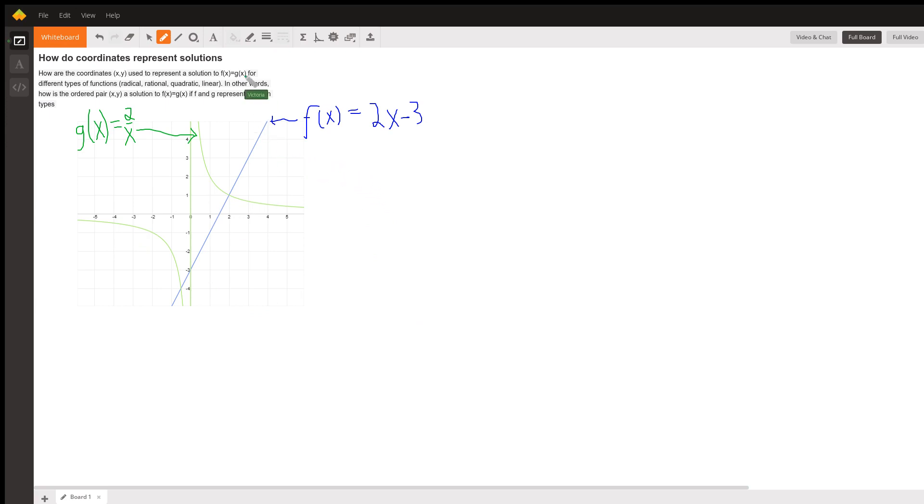Now, if you set f of x equal to g of x, you could solve this by setting 2x minus 3 equal to 2 over x and do a whole bunch of algebra. But your question is, what do the coordinates use to represent a solution? And I'll show you.